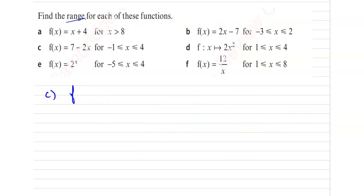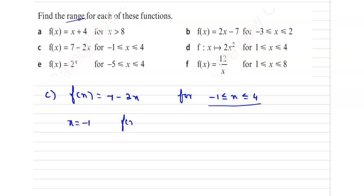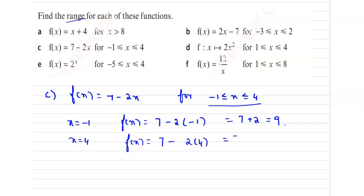Third one: the function given is f of x equal to 7 minus 2x for minus 1 less than or equal to x less than or equal to 4. This is the domain given. Now take x equal to minus 1, that is the lower boundary. So, f of x equal to 7 minus of 2 times minus 1, which is 7 plus 2, equals 9. Take x equal to 4. So, f of x equal to 7 minus 2 times 4, so 7 minus 8, which is minus 1. Hence, the range is minus 1 less than or equal to f of x less than or equal to 9.